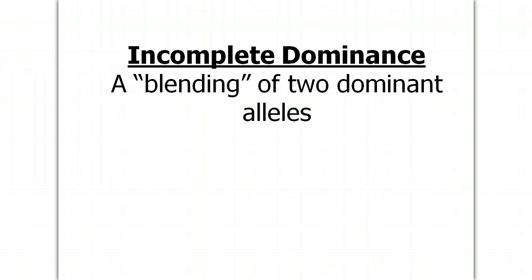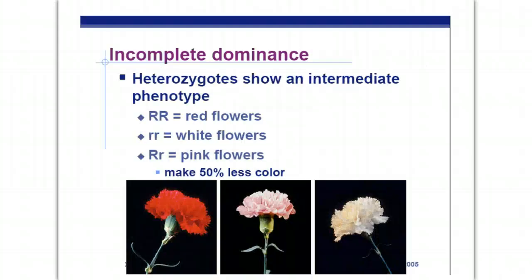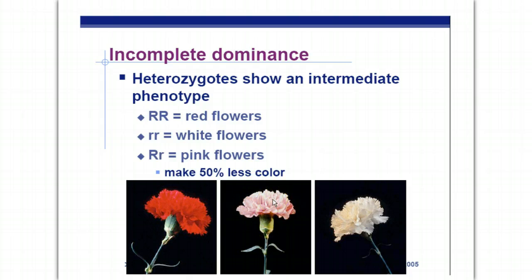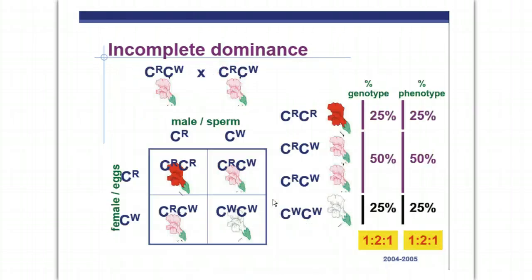Incomplete dominance is a blending of two alleles. If you have big R, big R, you've got red. If you have big W, big W, you're going to have white. However, if you have a heterozygote, you have a blending of the two traits for pink — that is an example of incomplete dominance. Here we have the cross: big R crossed with big W, which are incomplete dominance. If you have both, you end up with pink flowers — it's a blending of the two traits. Here you can see the Punnett square for that. This ends our genetics concepts for Honors Biology. Thank you.